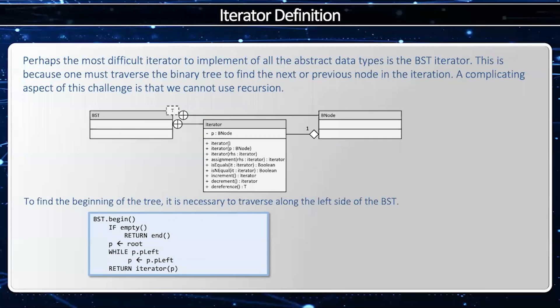Now, not all iterators work the same. The binary search tree is definitely an example of one of the most complicated iterators in the standard template library. This video will demonstrate how the iterator works. We'll start with the definition of the iterator. The iterator is a nested class within the binary search tree, and we know it's a nested class from the pinwheel operator.